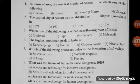The sixth question: what was the theme of Indian Science Congress in the year 2015? Options: Science and Technology for Inclusive Development; Science and Technology for India's Development; Science and Technology for Rural Development; Science and Technology for Human Development. The correct option is D — Science and Technology for Human Development. Prime Minister Narendra Modi inaugurated the Indian Science Congress 2015 at Mumbai University; it was the 102nd edition, and Mumbai was hosting the event.